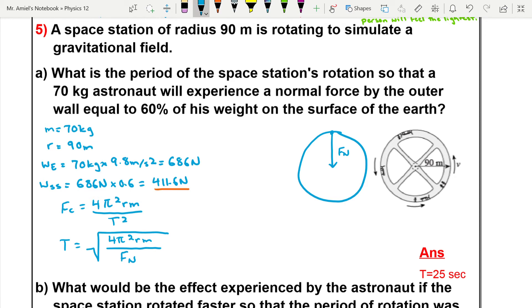So we'll plug in our values and we'll say that we've got 4π² times the radius, which is 90 meters, times 70 kilograms, and that's all going to be over 411.6 Newtons.